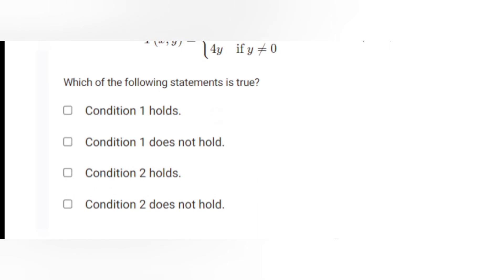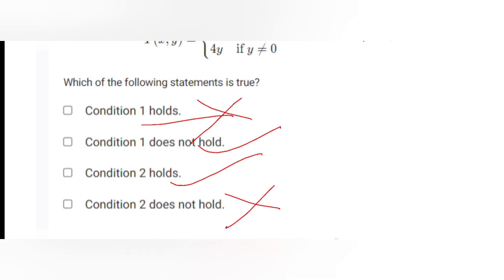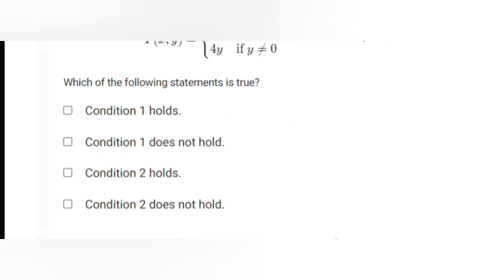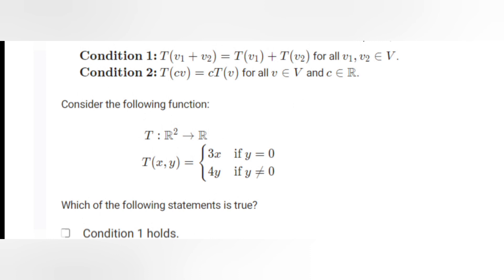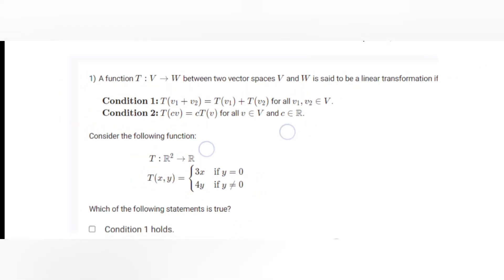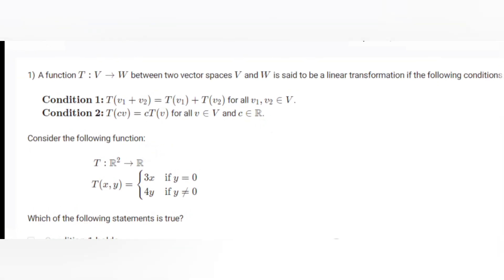To summarize: Condition 1 holds is NOT true. Condition 1 does not hold is TRUE. Condition 2 holds is TRUE. Condition 2 does not hold is wrong. So the correct answers are that Condition 1 does not hold and Condition 2 holds. That's how we solve the first question.